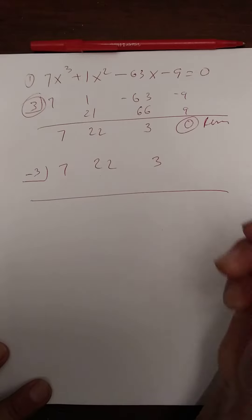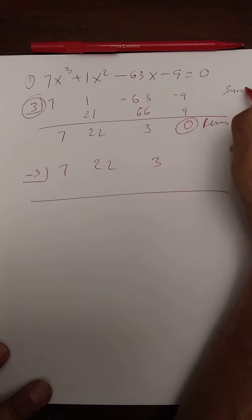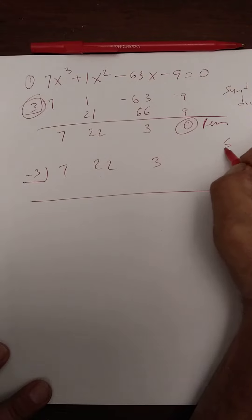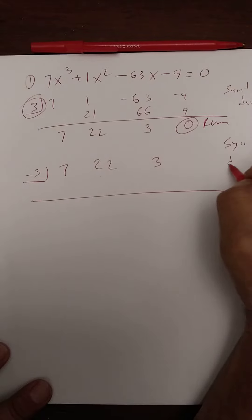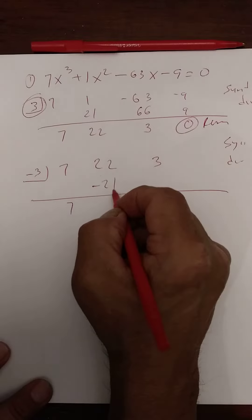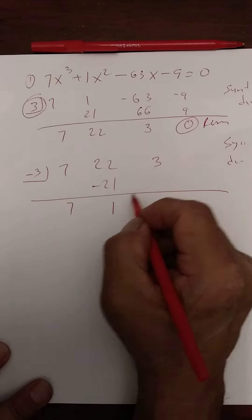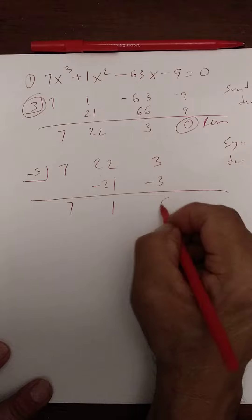Synthetic division again. So now we have 7 times -3 is -21, 22 minus 21 is 1, and 3 minus 3 is zero remainder.